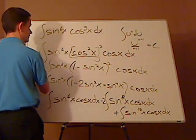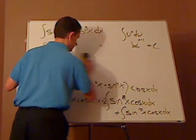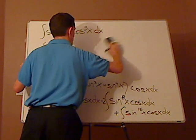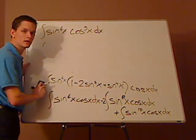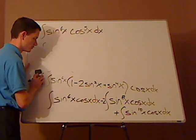So let me erase this. Now I'm kind of out of room. It would be plus sine to the 10th x cosine x dx. So let me erase this. We're going to be applying the power rule in a sec.